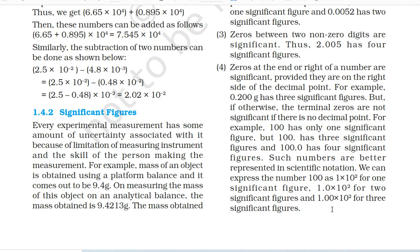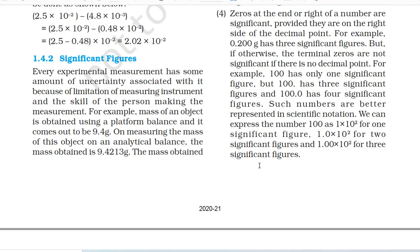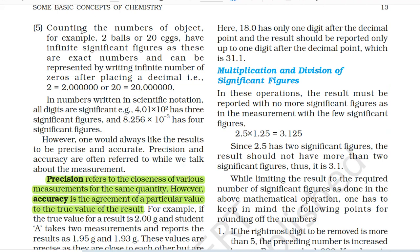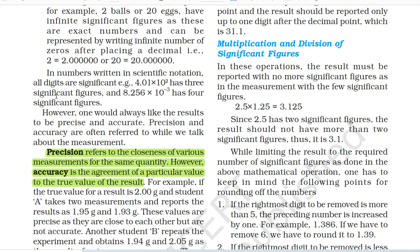Such numbers are better represented in scientific notation. We can express 100 as 1 × 10² for one significant figure, 1.0 × 10² for two significant figures, and 1.00 × 10² for three significant figures. Fifth, counting the numbers of objects — for example 2 balls or 20 eggs — have infinite significant figures as these are exact numbers. If numbers are written in scientific notation, all digits are significant. For example, 4.01 × 10² has three significant figures and 8.256 × 10⁻³ has four significant figures.